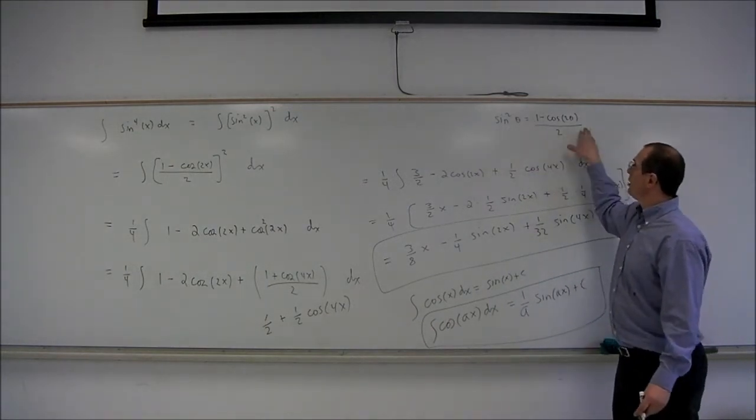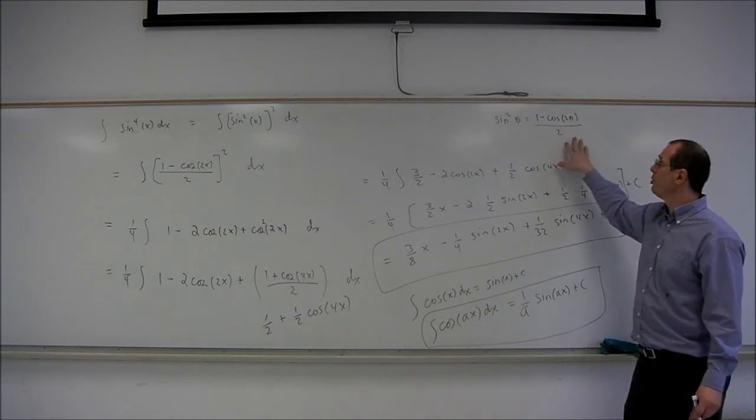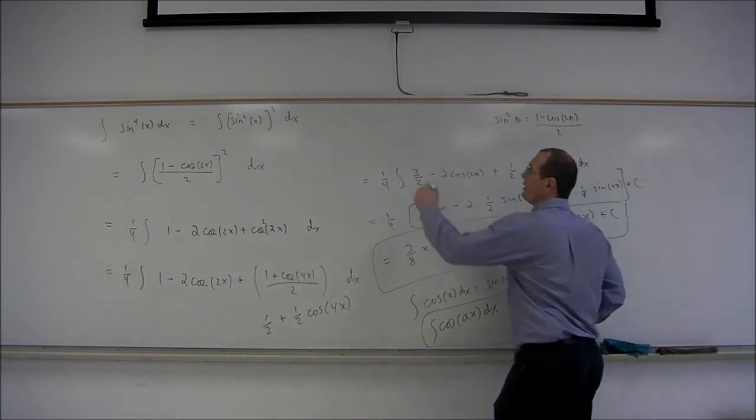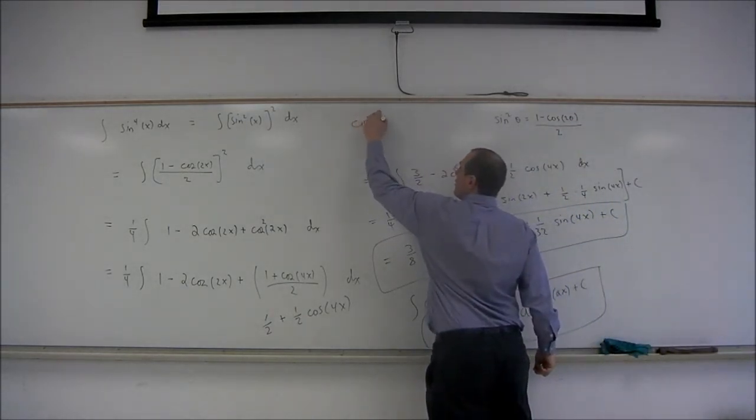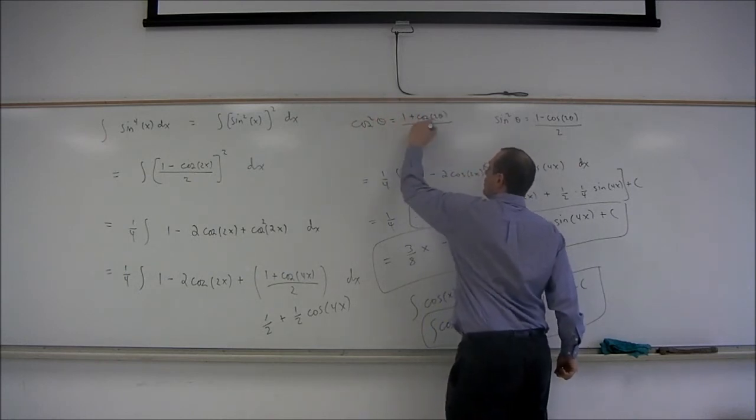And to handle this, we use the double-angle formula sine squared theta equals 1 minus cosine 2 theta over 2. And cosine squared theta equals 1 plus cosine 2 theta over 2.